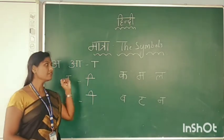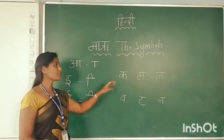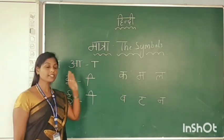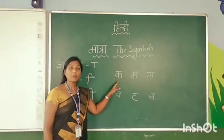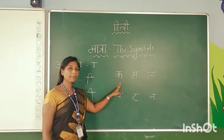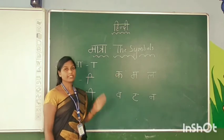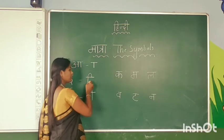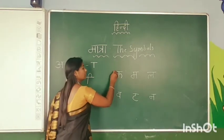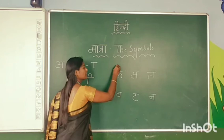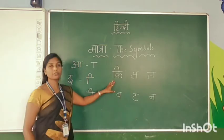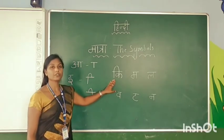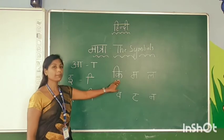The first letter is Ka. Now I am joining the symbol of the short sound of E. I am using the symbol before the Vyanjan letter. So Ka plus E — I place the symbol before the Vyanjan letter Ka. The short sound of E: Ka plus E is equal to Ki. It will become Ki.